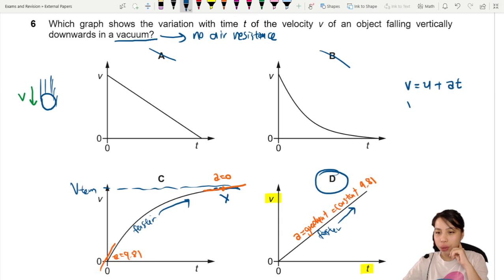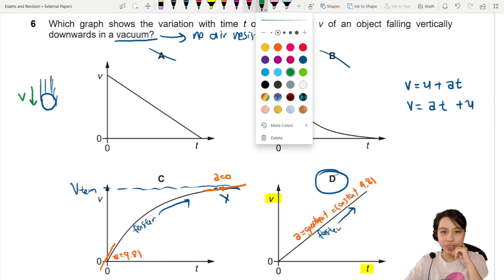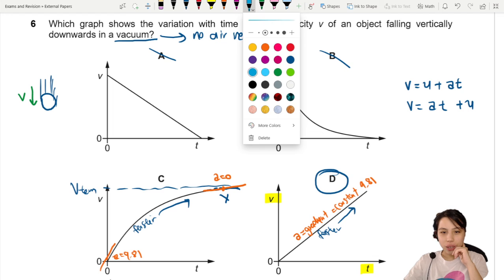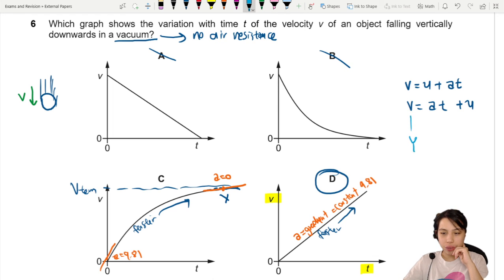So this itself, you can rearrange into a straight line equation already. V equals AT plus U. I rewrote it this way so that we can recognize a little bit that our y-axis is V. X-axis is T.